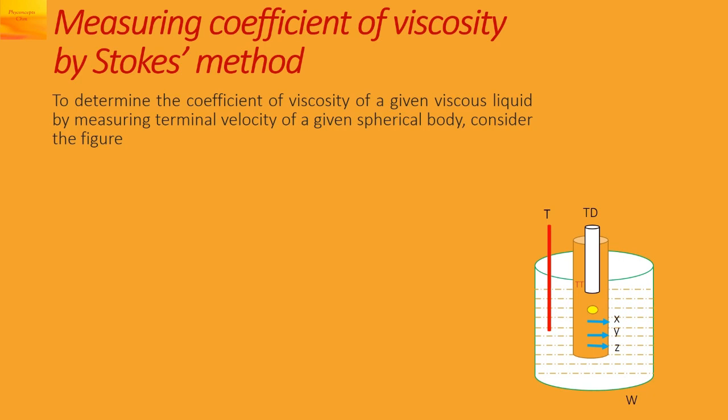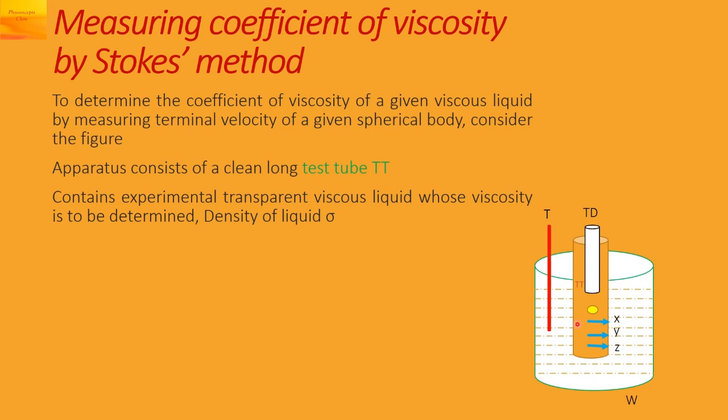Observe this figure. Here we have a clean long test tube TT. It contains the experimental transparent viscous liquid whose viscosity is to be determined. The density of the liquid we are denoting as sigma.